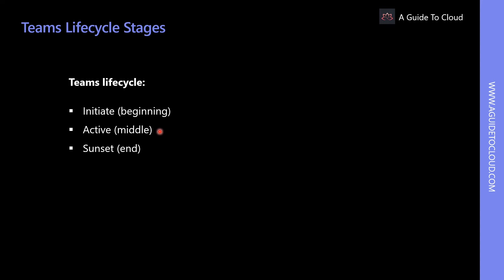The decision points that should be considered in the middle stage include: who will monitor usage to identify problems; and what metrics will be used to determine team health; and how to identify any teams that have reached the end of their useful life. Important decision points related to the end stage include: defining what the end of a team's life looks like; documenting best practices and lessons learned; and archiving data if necessary.